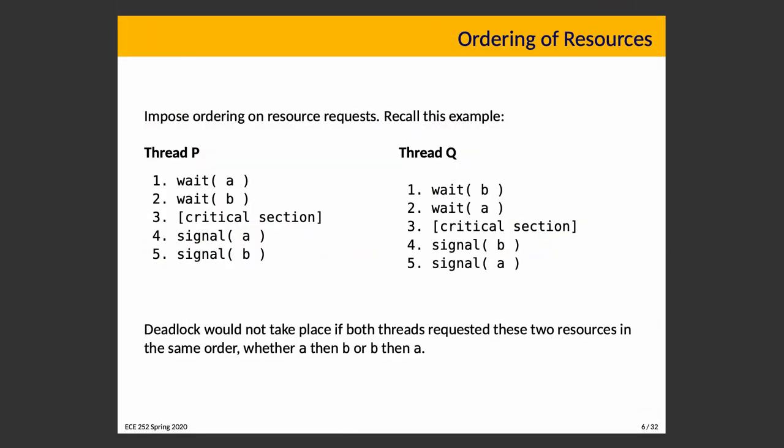Deadlock doesn't take place if both threads request two resources in the same order. It doesn't matter whether we choose A then B or B then A — some natural ordering might be obvious. This is not hypothetical: a real debugging scenario involved a shipping system where containers were locked in different orders across two concurrent messages for the same shipment, causing a deadlock. The solution was to sort the containers before acquiring their respective locks, ensuring things always happen in a consistent order.